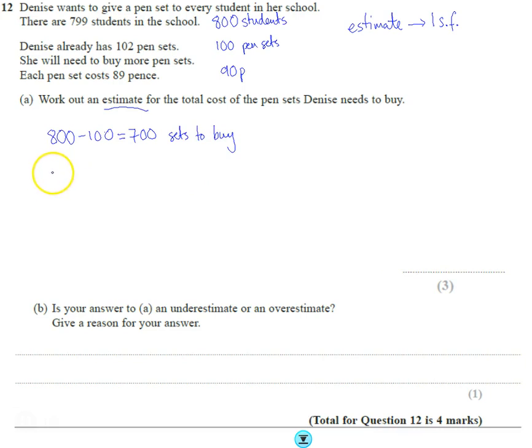So we're going to do the 700 sets she's going to buy, the leftovers we need to buy a set for, times 90p. And 7 times 9 is 63 - one, two, three zeros. Means it's going to cost 63,000 pence.